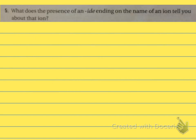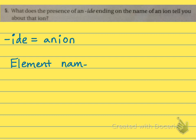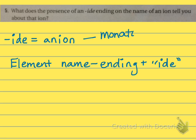Number five: what does the presence of an "-ide" ending on the name of an ion tell you about that ion? The "-ide" means it's an anion, because that's how we name negatively charged anions. We take the element name, and an "-ide" ending means it's a monatomic — made of a single atom — ion with a negative charge. Typically it's going to be a non-metal.